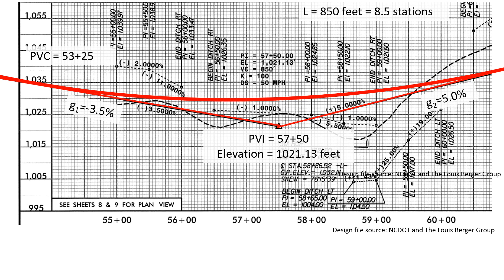We can find the station of the PVC and it's not shown on this page on the previous design page. But it's a station of 53 plus 25 and we get that by subtracting half the length from the PVI station.